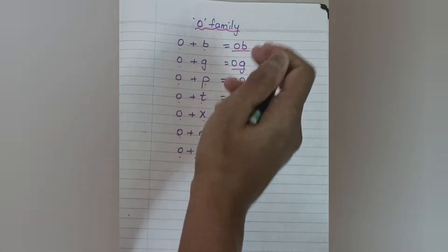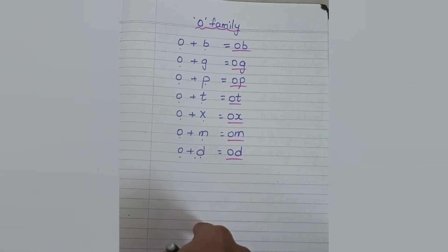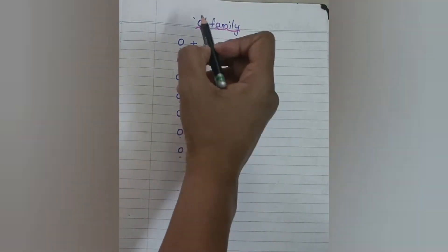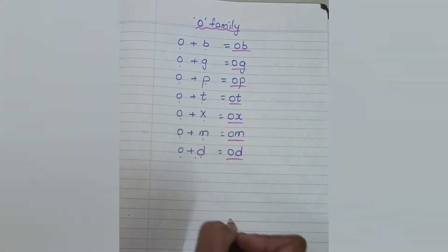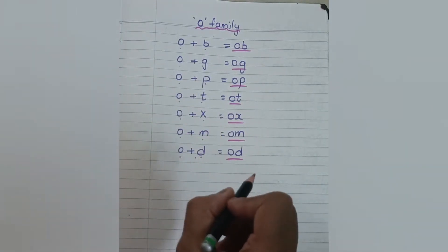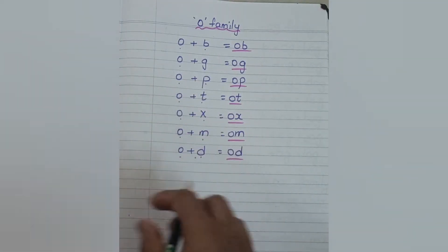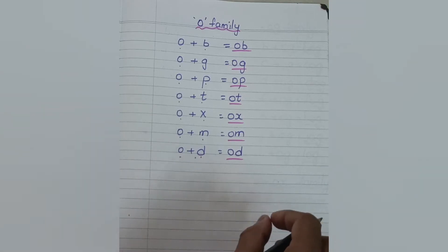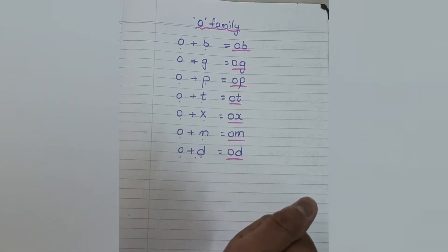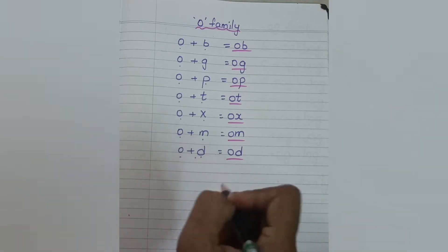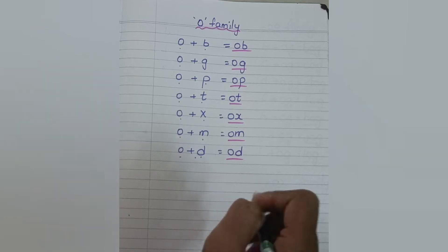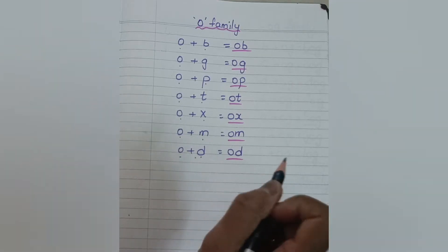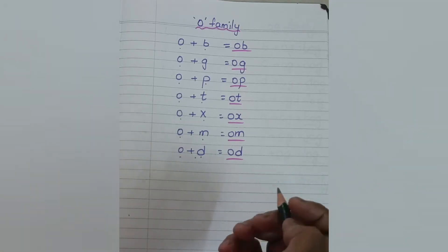If you are watching this video for the first time, don't introduce O family first. Before that you have to introduce A, E, I. You have to follow this sequence. Before starting this video, I would like to request — if you haven't subscribed to my channel yet, please do subscribe and like the video.